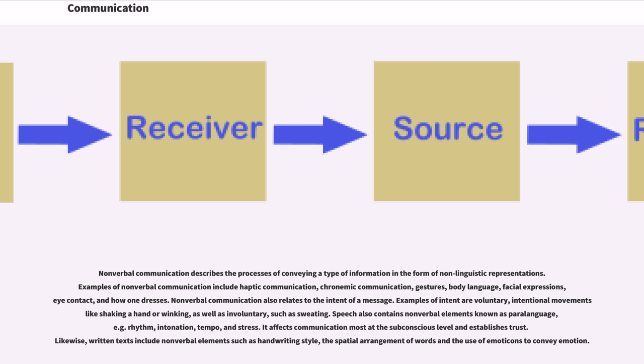Non-verbal communication also relates to the intent of a message. Examples of intent are voluntary intentional movements like shaking a hand or winking, as well as involuntary such as sweating. Speech also contains non-verbal elements known as paralanguage, for example rhythm, intonation, tempo, and stress. It affects communication most at the subconscious level and establishes trust. Likewise, written texts include non-verbal elements such as handwriting style, the spatial arrangement of words, and the use of emoticons to convey emotion.